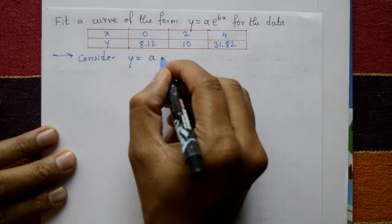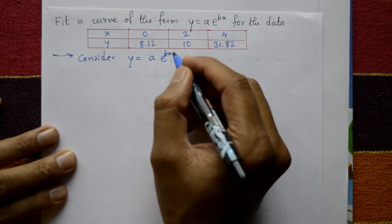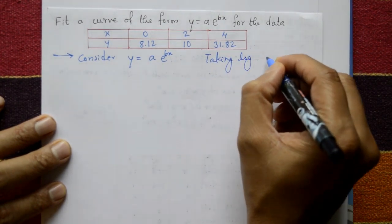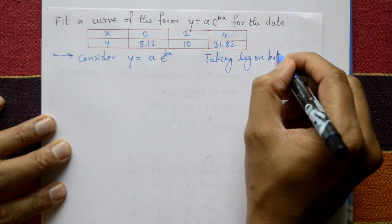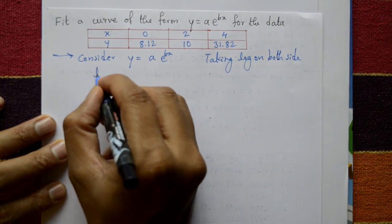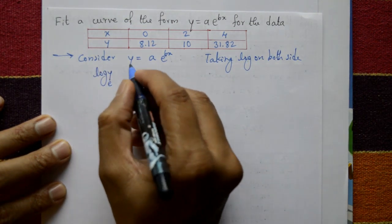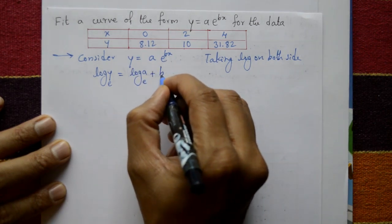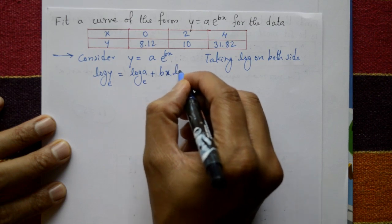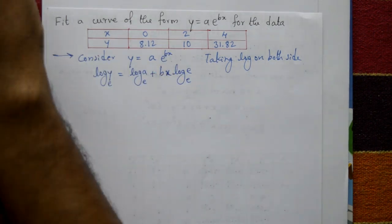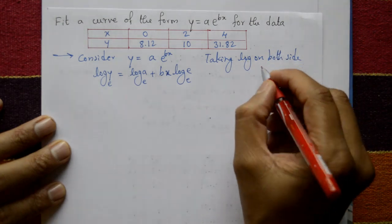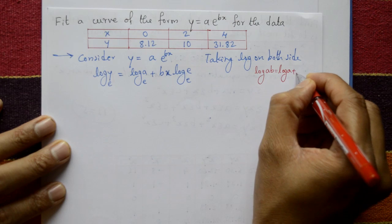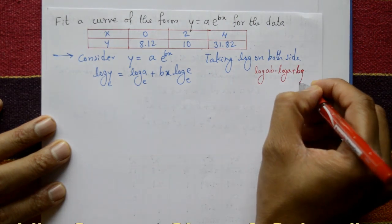Taking log on both sides: log y (base e) = log a (base e) + bx · log e (base e). Using the log property: log(ab) = log a + log b.